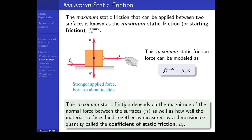The maximum static friction force depends on the magnitude of the normal force between the surfaces, as well as how the material surfaces bind together, as measured by the dimensionless quantity known as the coefficient of static friction — the Greek symbol mu sub s. It makes sense that the normal force is included: the more force applied between the surfaces, the harder the surfaces are held together and the more the ridges embed themselves in each other's surfaces. This coefficient depends on the materials being used.